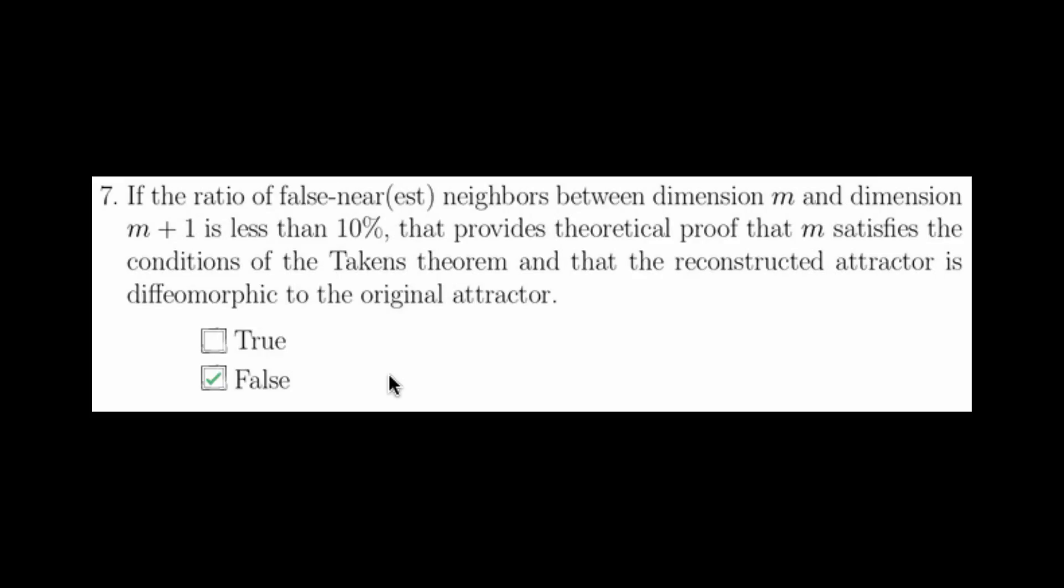You should keep in mind that all of these heuristics, including false nearest neighbor, are purely heuristics. They provide no theoretical proof whatsoever that you have satisfied the embedding theorems. That is, in practice, there is no way to theoretically prove from a time series unless you already know the dimension of the system and have chosen an embedding dimension which satisfies the Takens theorem.